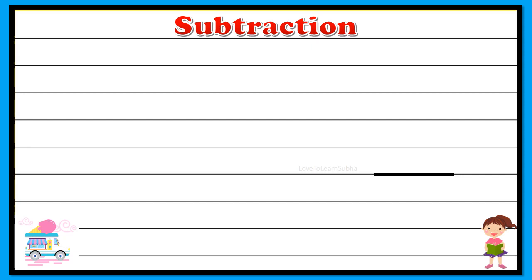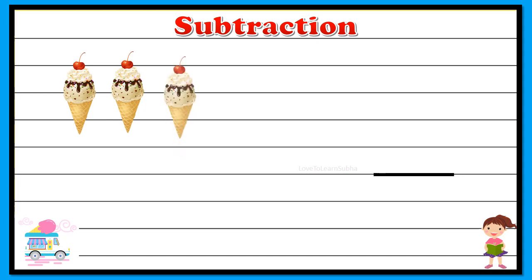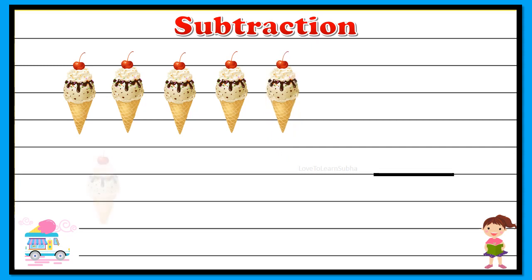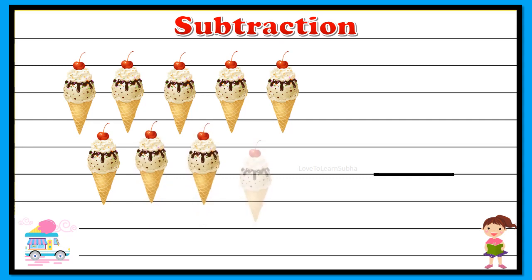Now let's understand the concept of subtraction with another example. Here we have an ice cream cart. Let's see how many ice cream cones are available — one, two, three, four, five, six, seven, eight, and nine — so there are totally nine ice creams available. Now let's assume that four of those ice creams got sold out, so we write it as minus four.